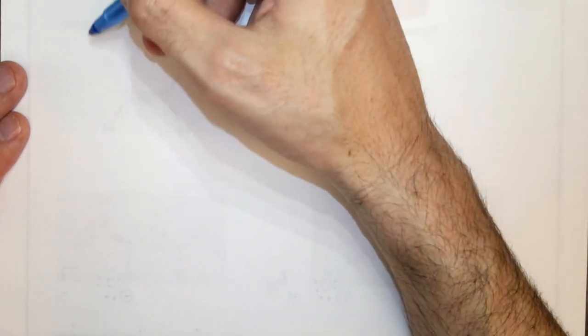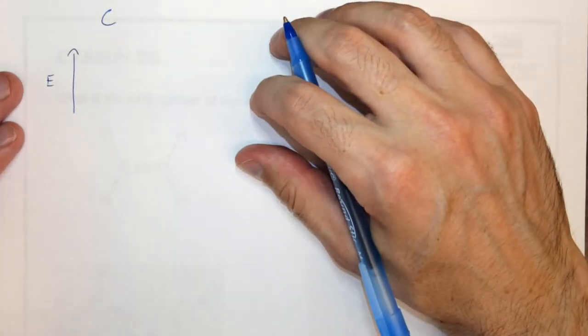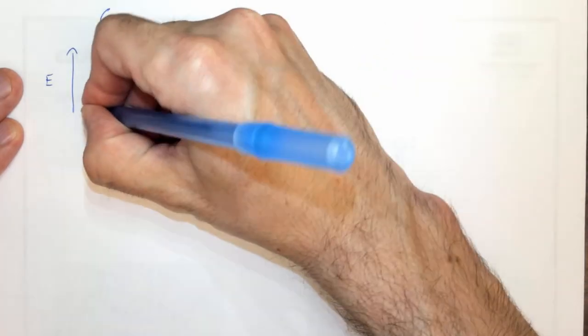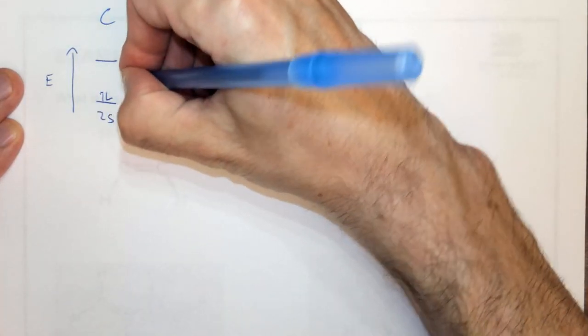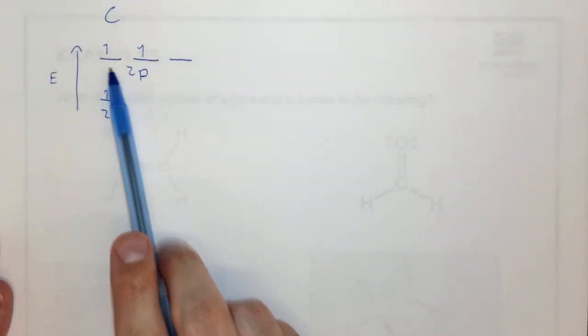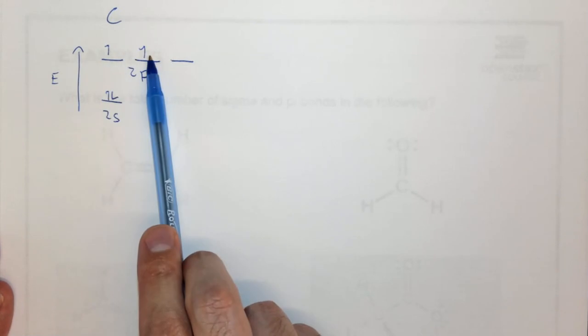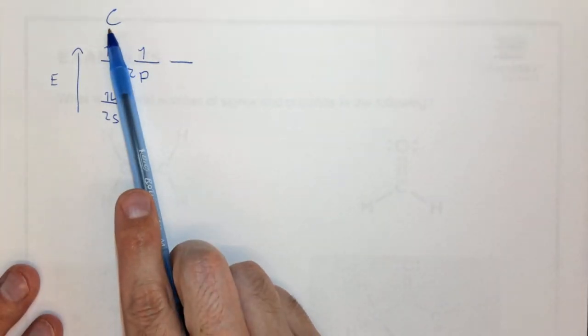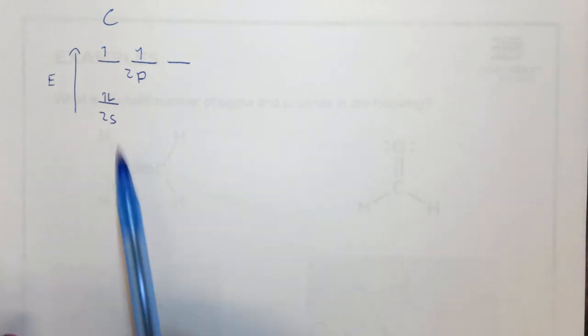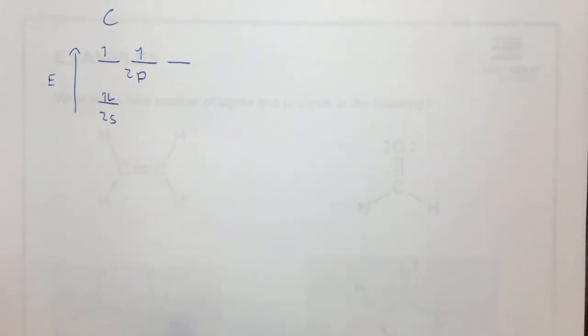So I'm going to redraw essentially what you see on the paper. We have energy, and this is carbon. We have the 2s orbital with two electrons, and the 2p orbitals with two electrons. The electron configuration for carbon is 1s2, 2s2, 2p2. This is just it written out on the energy diagram. Now this carbon is known to bind with hydrogen.